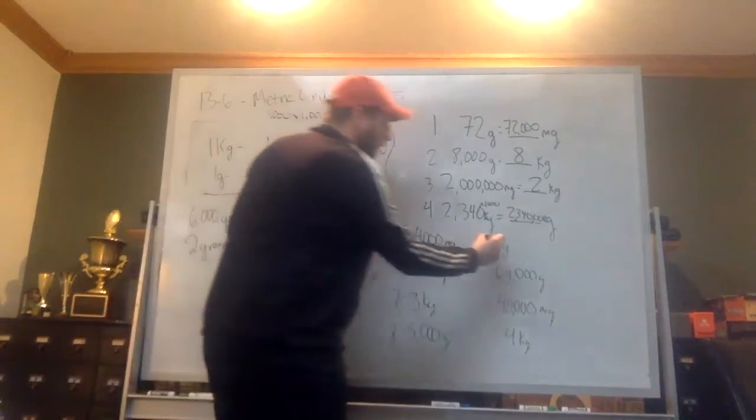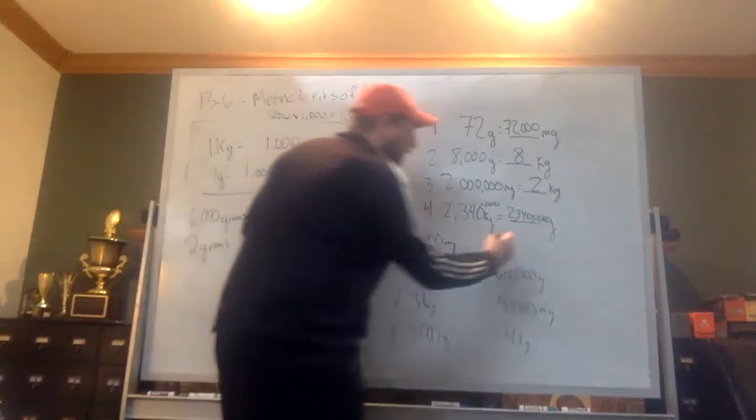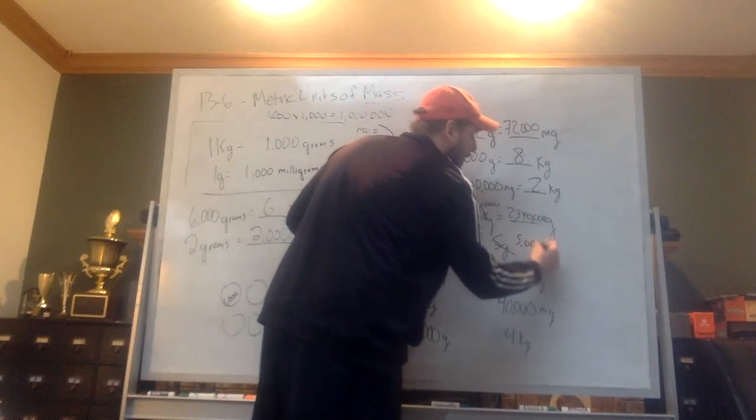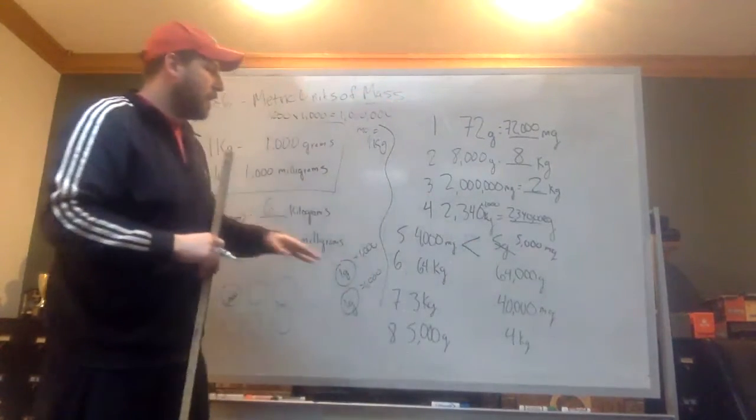So let's change these 5 grams into milligrams. So again, we know that every gram is 1,000 milligrams, so this is 5,000 milligrams. We know that 5,000 is bigger than 4,000.